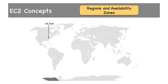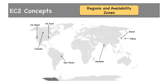Here are the locations: US East, US West, Mumbai India, Seoul South Korea, Tokyo Japan, Sao Paulo Brazil, Canada, European Union — actually multiple locations in the European Union — Singapore, Sydney Australia. Each location has something called a region.